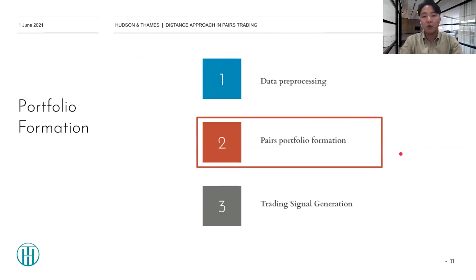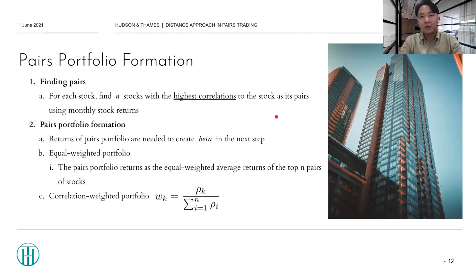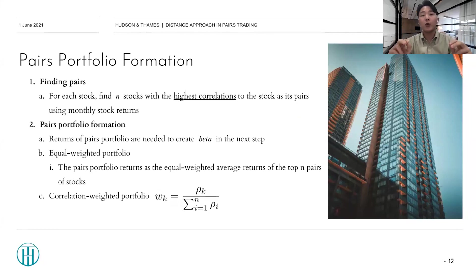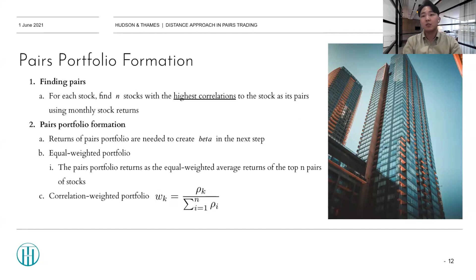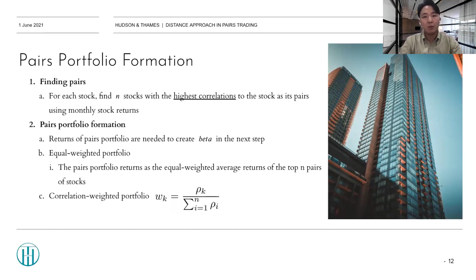The next step is pairs portfolio formation. First, we find pairs for each stock — specifically, we find the N stocks with the highest Pearson correlation to the stock. After pairs are selected for each stock, pairs portfolio formation is done. This portfolio is not the portfolio we will trade in the end, but rather a benchmark portfolio for each stock. The portfolio of those N stocks only serves as a benchmark for portfolio sorting in the following steps. You can choose either an equal-weighted portfolio or a correlation-weighted portfolio. The equal-weighted portfolio uses the average returns of the top N pairs of stocks, while the correlation-weighted portfolio uses correlation coefficients as weights instead.